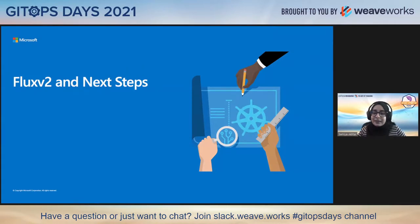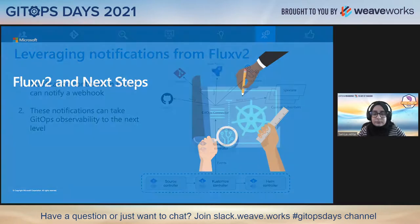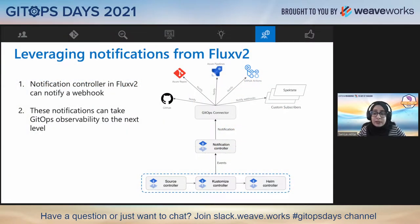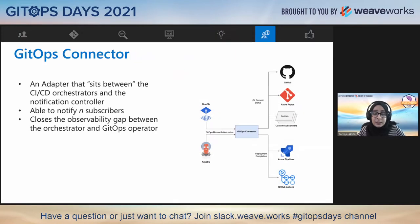Here's the fun part — let's see how Flux V2 can improve Spectate even more. Flux V2 comes with a notification controller that can notify a webhook for alerts in the source, Kustomize, or the Helm controller. These notifications can be utilized in tools such as Spectate to improve them even more. The GitOps connector is a tool built by a team at Microsoft that sits between the notification controller and CI/CD tools. It sends enriched notifications as JSON objects to all of these tools for better observability, and can also notify any number of subscribers with this data. This helps close the observability gap between the orchestrators and Flux.